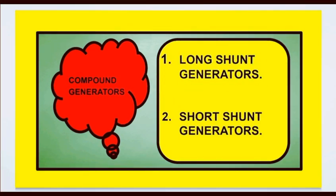Next, compound generators. Compound generators are further divided into two types depending upon their construction: long shunt generators and short shunt generators.